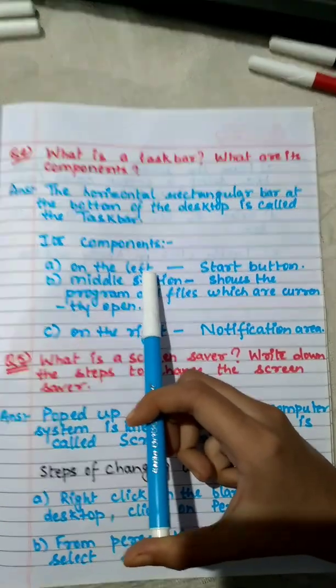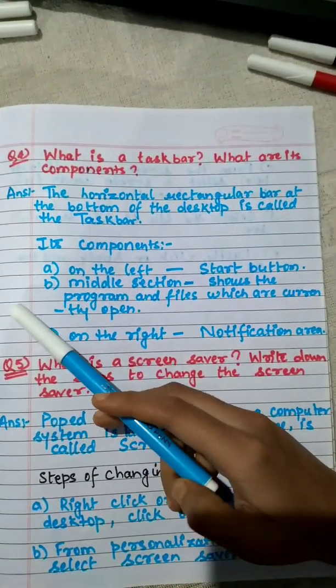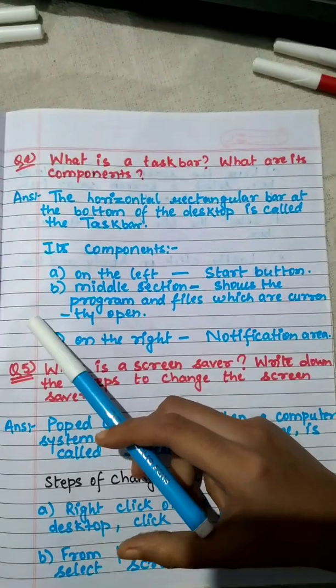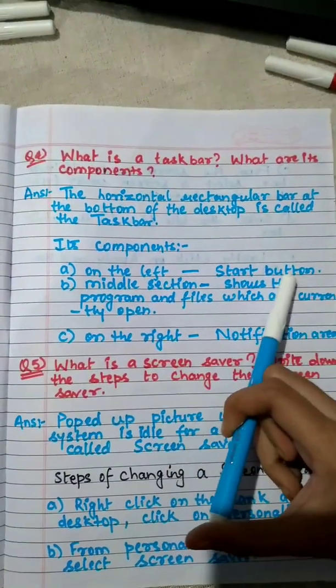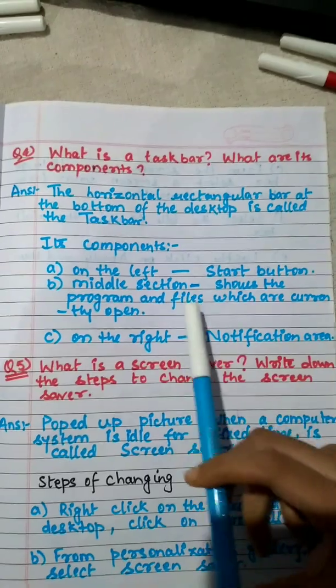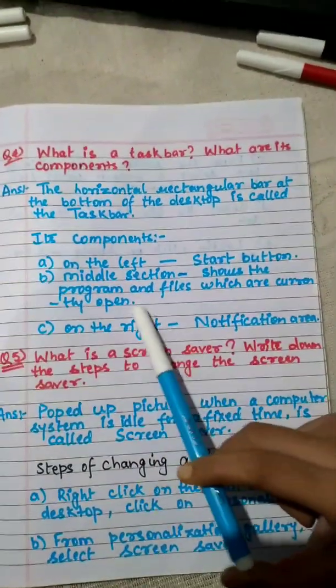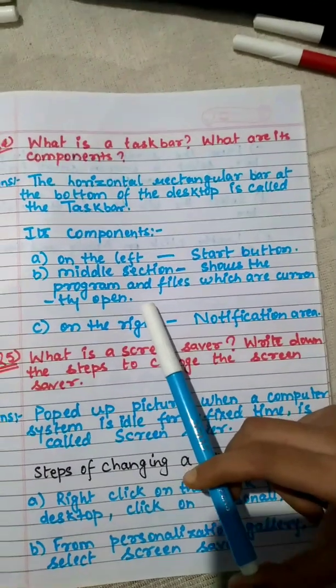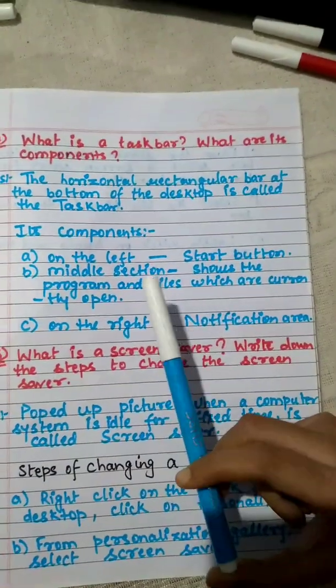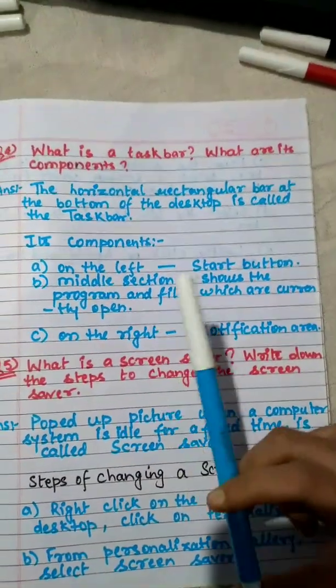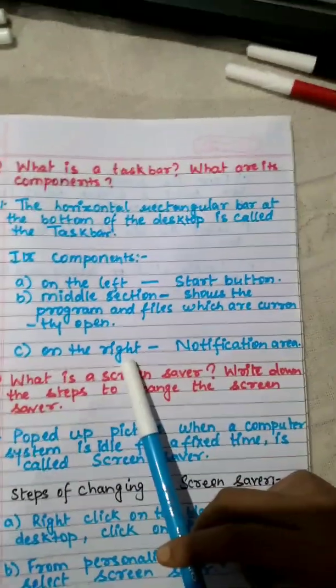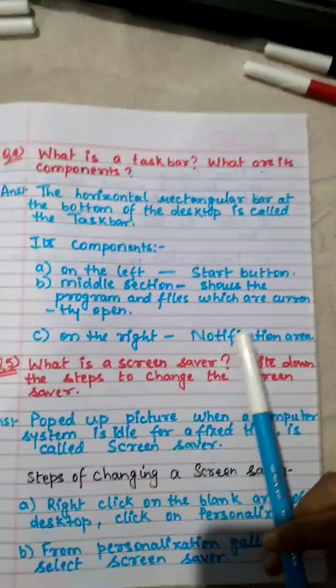A: On the very left part of a taskbar is the start button. In the middle section of the taskbar it shows the programs and files which are currently open. Currently open means the programs or files on which we are currently working. On the very right corner it shows the notification area.